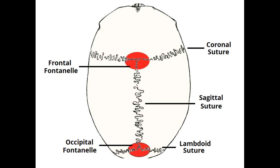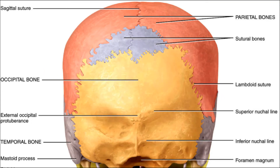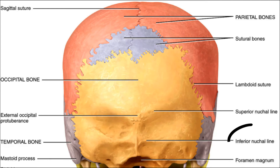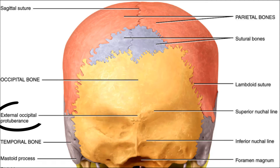Metopic, coronal, sagittal, lambdoid. I'd also like you to remember three other structures: the superior nuchal line, the inferior nuchal line, and the external occipital protuberance. The nuchal lines are points of muscle attachment, and the external occipital protuberance is the point of attachment of the nuchal ligament.